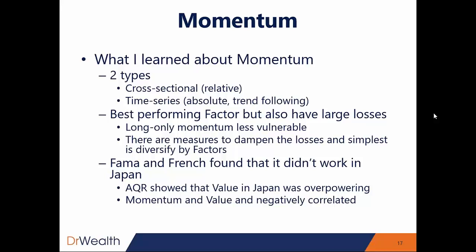Fama and colleagues, who discovered value and size, have never wanted to acknowledge momentum as a real factor because they found that momentum worked in every country except Japan. AQR, a famous factor-based investing hedge fund based in the US, explained that momentum didn't fail to work in Japan — it was suppressed because value was a lot more overpowering there. Momentum and value factors tend to be negatively correlated, so if value has been doing very well in Japan, that suppresses the performance of momentum. Their argument is that it's not that momentum doesn't work — value in Japan was simply much stronger than anywhere else in the world.